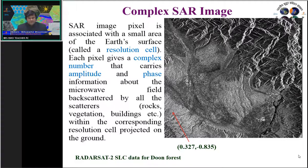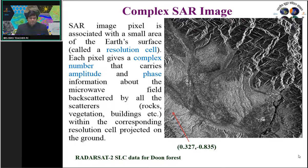SAR data is always represented by complex numbers. Each resolution cell — the smallest unit of any image acquired by a sensor — is represented by complex numbers to provide phase and amplitude information. Without the complex format, it would be difficult to perform polarimetry and interferometry. This is the first requirement: the dataset should always be in complex format.